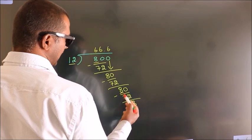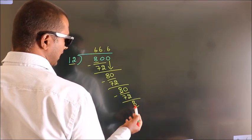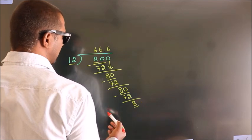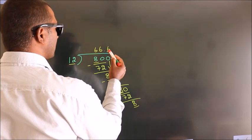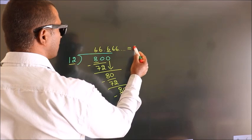Here we had 8, and we got 8 again. That means this number keeps on repeating. So this is our quotient.